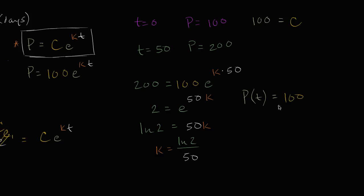100 times E to the, now K is natural log of 2 over 50, so natural log of 2 over 50, and then that times T.